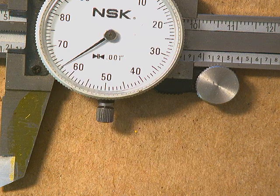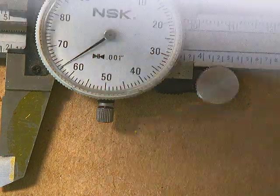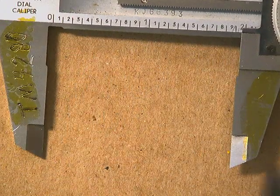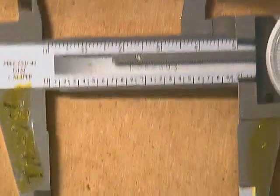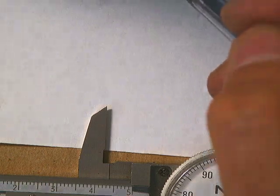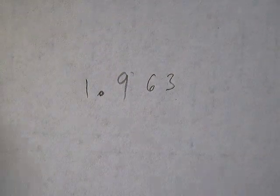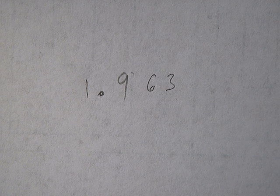And then on the dial, I am at 60, 61, 62, 63. So my measurement for that pack of gum: one full inch as measured here, then I'm past the 9 on the graduation scale so nine-tenths of an inch, and then on the dial I am at 63. So my answer would be 1.963.